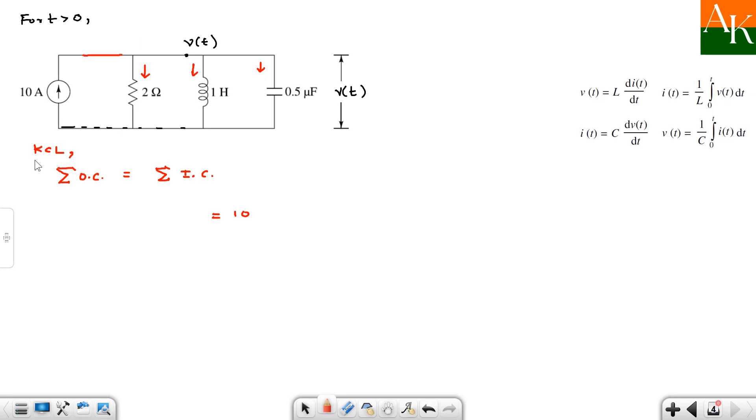So current through the resistance one can easily write down and that current can be written as V of t minus 0 by 2. Now we have to write down the current through inductor. Current through inductor is given by this formula 1 by L integration of V of t dt. So here we will have 1 by 1. This 1 is for inductor value 1 Henry. Integration ranging from 0 to t, V of t dt. And now we have to write down current through the capacitor. And current through the capacitor is given by the formula C dV by dt. So here you will have 0.5 into 10 to the power minus 6. And here you will have dV by dt, dV of t by dt. And the incoming current 10 ampere that I am writing over here.